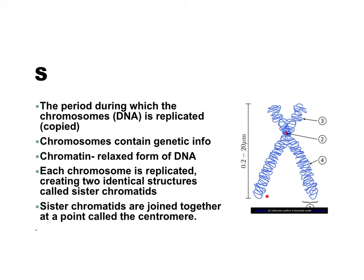Let's take a look at this picture. The whole thing is called the chromosome — it makes this X figure. All the squiggly lines inside are the DNA. When DNA is really relaxed and spread out, we call it chromatin. But when it condenses, it forms this X-like figure, and that's when we call it a chromosome. Each side of the chromosome is called the sister chromatid — one half is one chromatid, and the other half is the other chromatid. They're joined together at the little point in the middle, and that's what we call the centromere.